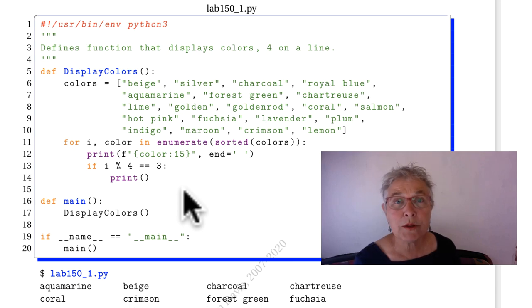Welcome back. I hope that you enjoyed that. Lab 150 underscore one uses enumerate. It's a very good example of when you need enumerate.